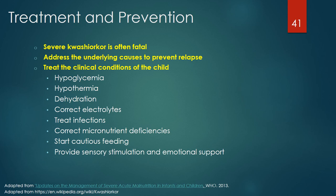Severe kwashiorkor is often fatal. Both clinical subtypes of severe acute malnutrition — kwashiorkor and marasmus — are treated similarly. Treatment includes addressing the underlying cause to prevent relapse, correcting hypoglycemia, hypothermia, and dehydration, correcting electrolyte imbalances, treating secondary infections with antibiotics, correcting micronutrient deficiencies, starting cautious feedings and slowly advancing to initiate catch-up growth, and providing sensory stimulation and emotional support.